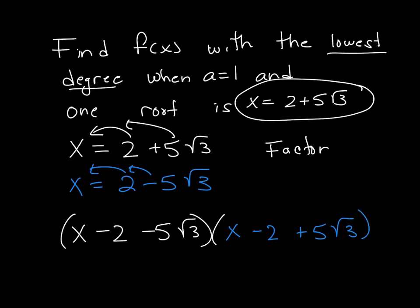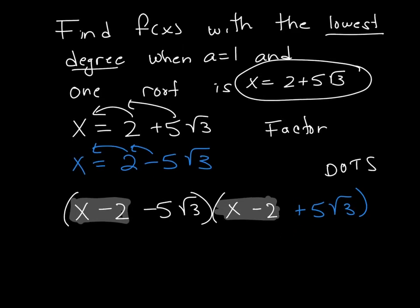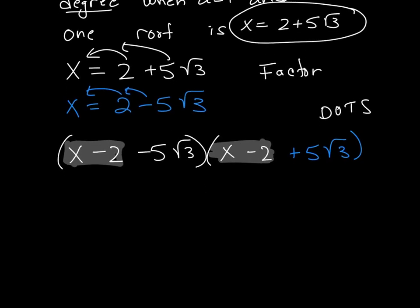Now, the best way to look at this is to think of this x minus 2 that is first for both of these, and look at this whole question as the difference of 2 squares. So the difference of 2 squares gives me x minus 2 quantity squared minus 5 square root of 3 quantity squared.